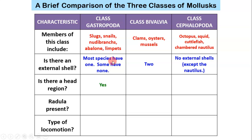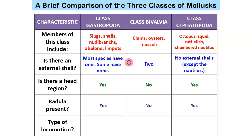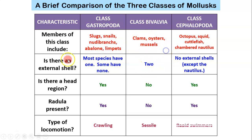Gastropods have an obvious head region — think of a snail and its head. Bivalves don't have an obvious head region, but cephalopods do. For the radula: gastropods have one, bivalves do not because they're filter feeders, and cephalopods also have one. For locomotion — meaning how they move — gastropods crawl, bivalves are mostly sessile (though there is a type of scallop that swims), and cephalopods are rapid swimmers.